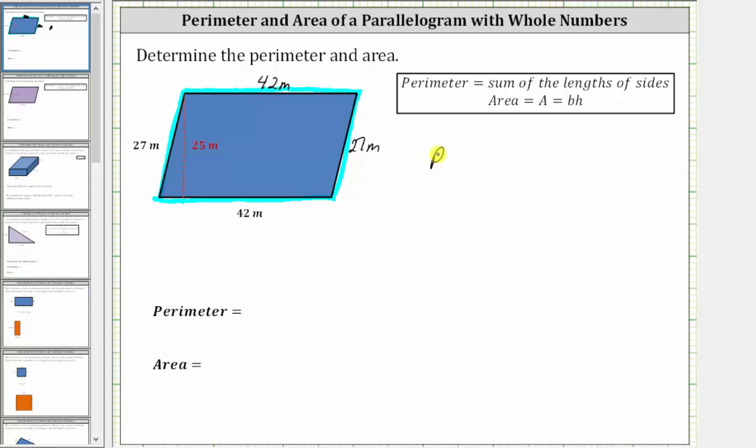So again, the perimeter P is equal to 27 meters plus 42 meters plus 27 meters plus 42 meters. Let's determine the sum vertically, lining up the corresponding place values.